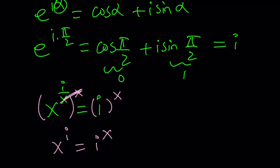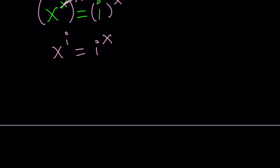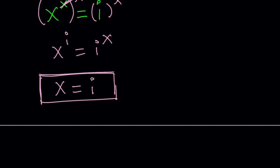So i is a number — it's imaginary, but still a number. We're looking for x, and x could be i, because i to the i equals i to the i. An i for an i! So x equals i is again one of the solutions. Are there any other solutions? Please comment.